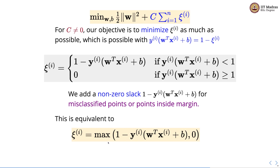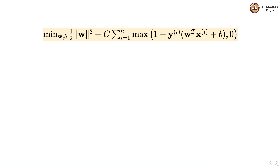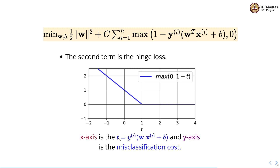This is equivalent to saying xi_i = max(1 - yi(w^T xi + b), 0), taking the maximum of the two cases. Plugging this into the soft margin SVM objective function, we get: minimize half of norm squared plus C times the sum from 1 to n of max(1 - yi(w^T xi + b), 0). The second term is called the hinge loss. On a plot where the x-axis is yi times (w^T xi + b) and the y-axis is the misclassification cost, whenever the value is >= 1 the cost is 0, and whenever it is less than 1 we have a linearly increasing misclassification cost.